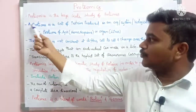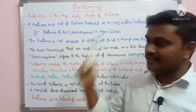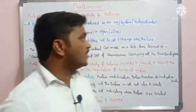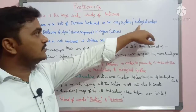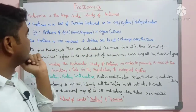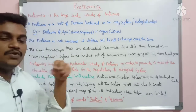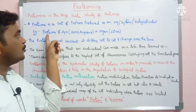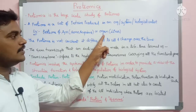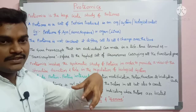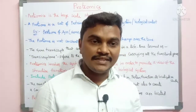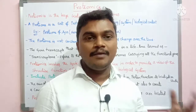A proteome is a set of proteins produced in an organism or a system. In a particular biological context, we have a set of proteins. For example, we have to discuss the proteome of a species — homo sapiens, human beings. If a particular organ is a liver, we have to discuss the set of proteins, the proteome, within that branch.